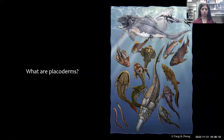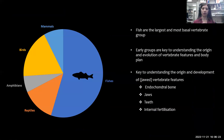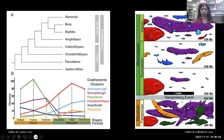Speaking of placoderms — what are placoderms? They are early fish, and fish are the largest and most basal vertebrate group. Being an early fish group, they are key to understanding the origin and evolution of multiple vertebrate features and body plans, including jaws, teeth, and bone. You can see their position in a basic vertebrate phylogeny: placoderms are located towards the base of the fish group, with jawless fish being phylogenetically earliest.